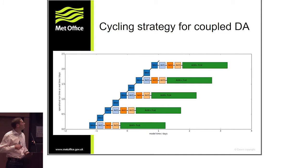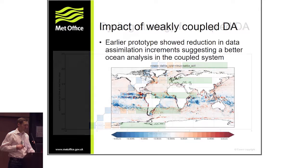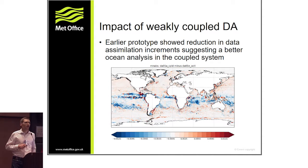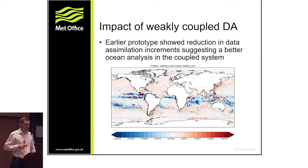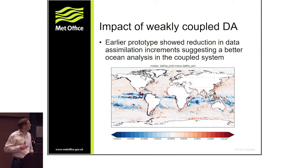The data assimilation systems remain independent — so atmosphere observations still don't directly influence ocean increments and vice versa — but the increments themselves are fed back into the coupled model. That's what we refer to as weakly coupled data assimilation. Operationally we have many separate six-hour cycles with catch-ups to allow use of late ocean observations. Work with a prototype earlier showed a general reduction in data assimilation increments for sea surface temperature when running with the weakly coupled DA.